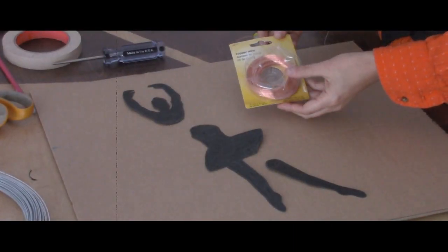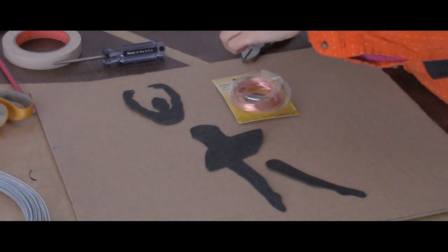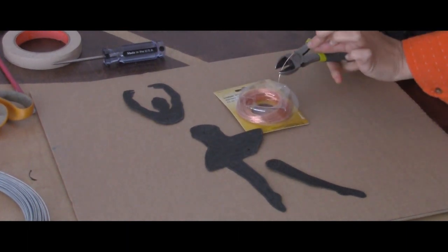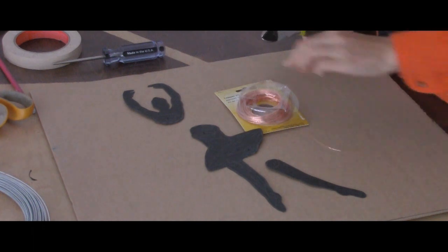So now you're going to take your copper wire, and you want to snip off about three inches, and you're going to want two pieces.